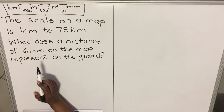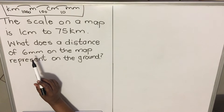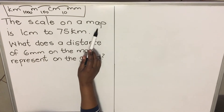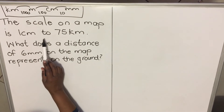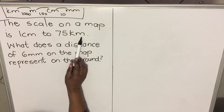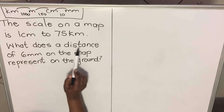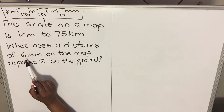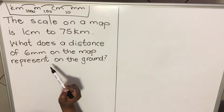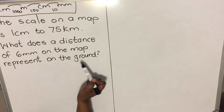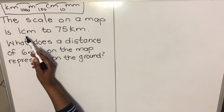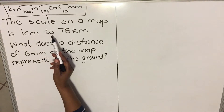Now let's look at the second example. The scale on a map is 1 centimeter to 775 kilometers. What does a distance of 6 millimeters on the map represent on the ground?